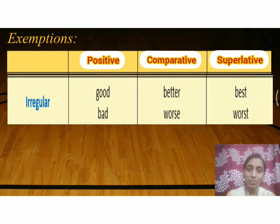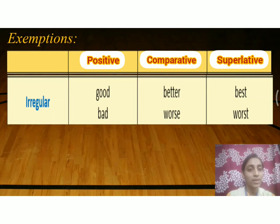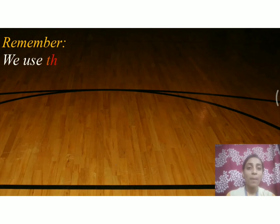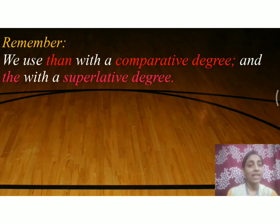Now there are some exceptions, children. There are some irregular adjectives which do not follow the above rules — their spelling will be completely changed in the comparative and superlative forms. For example, 'good': comparative is 'better', superlative is 'best'. Another example: 'bad': comparative is 'worse', superlative is 'worst'. Also remember, we use 'than' (T-H-A-N) with comparative degree, and 'the' (T-H-E) with superlative degree.